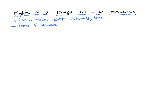This frame of reference could be of two types. It could be in the state of rest or it could be in the state of uniform motion, meaning constant velocity. That kind of a frame which is either in the state of rest or moving with a uniform velocity is called an inertial frame of reference.